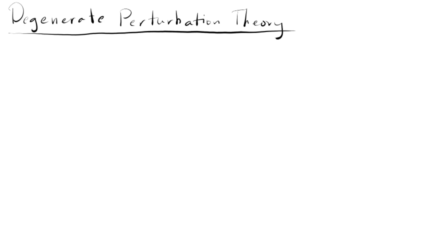Hey guys, we are back and we are going to do another video today. This time we're going to start talking about degenerate perturbation theory. Before we talked about non-degenerate perturbation theory, in which all the eigenstates had different energies. We did a couple examples with that and we just saw the theory behind it. But now we're going to look at degenerate perturbation theory, and before we start I just want to give a quick example of why we need this theory.